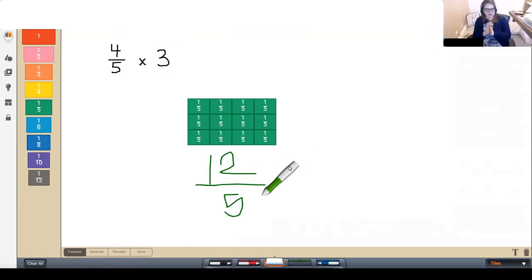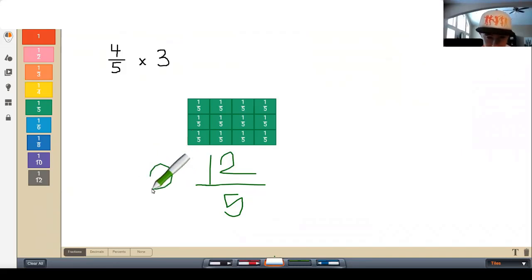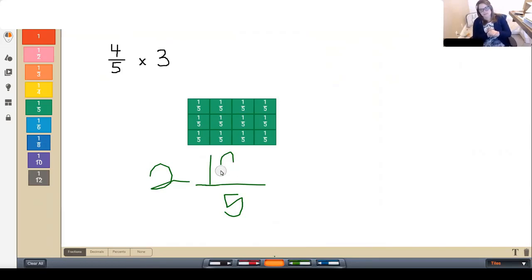Okay. How many groups of five are in 12-fifths? Two. There's two of them? Yes. Okay.